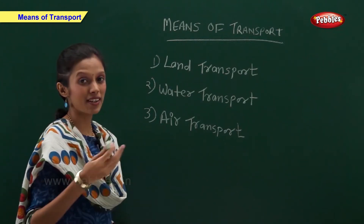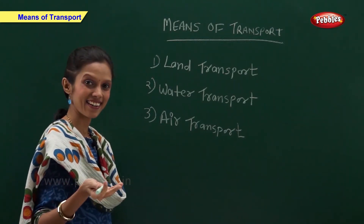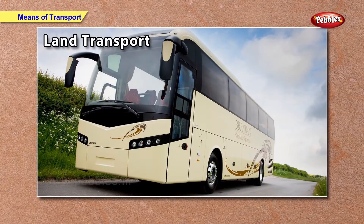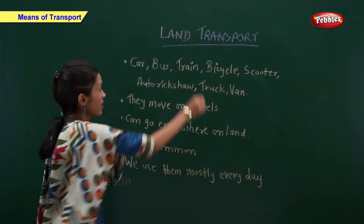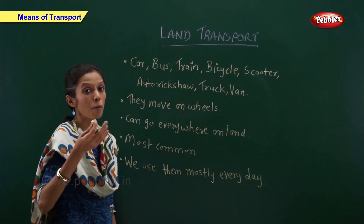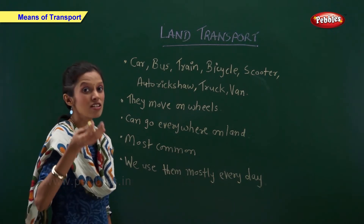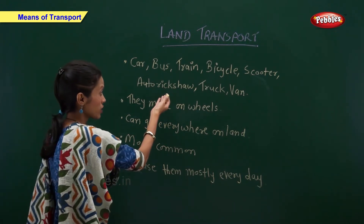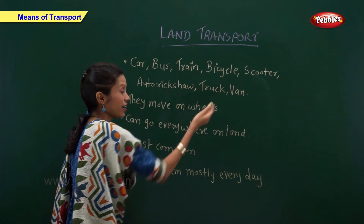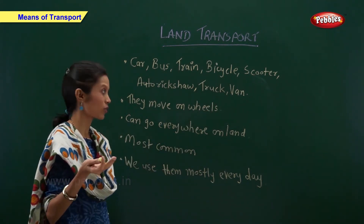Now let us have a look at each of them in detail. Land transport: car, bus, train, bicycle, scooter, auto rickshaw, truck and van are the examples of land transport.